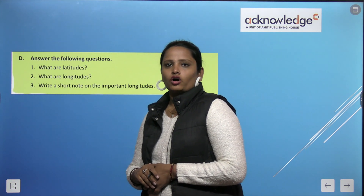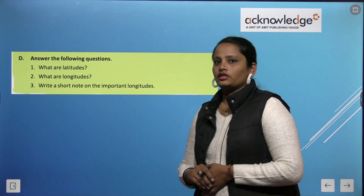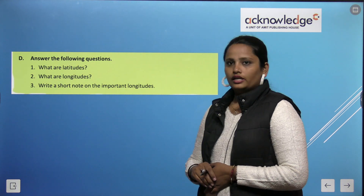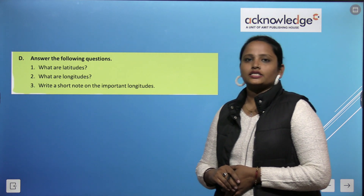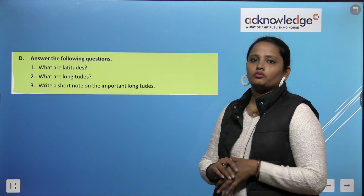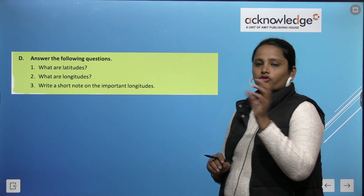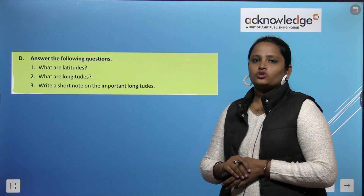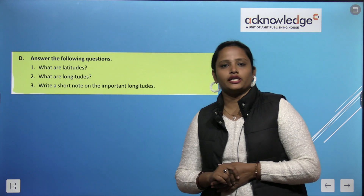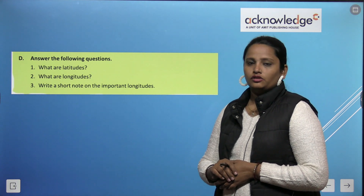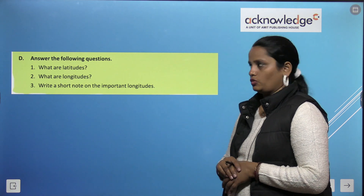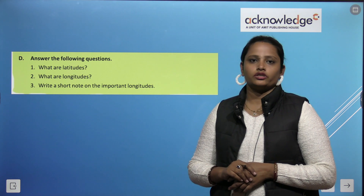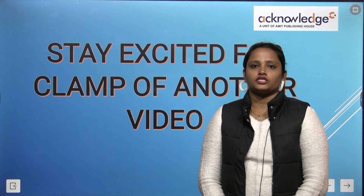Now let's come to the questions and answers. The first question is: what is latitude? The answer is: latitudes are horizontal lines that encircle the earth from east to west. What are longitudes? Longitudes are imaginary lines that encircle the earth from the north to the south pole. Like this, children, complete the rest of the questions. With this we have completed the chapter. I hope you have understood it. If you have any queries related to the chapter, you can ask me in the comments. I will be waiting for you with a new video.